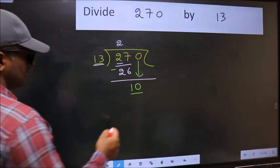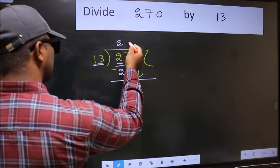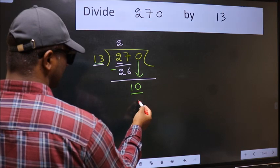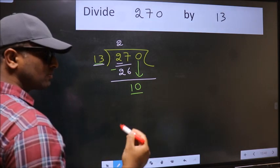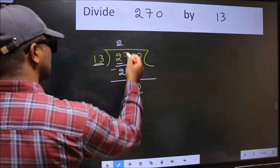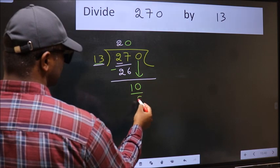Instead, what you should think of doing is, which number should we take here. If I take 1, we will get 13. But 13 is larger than 10. So what we should do is, we should take 0. So 13 into 0, 0.